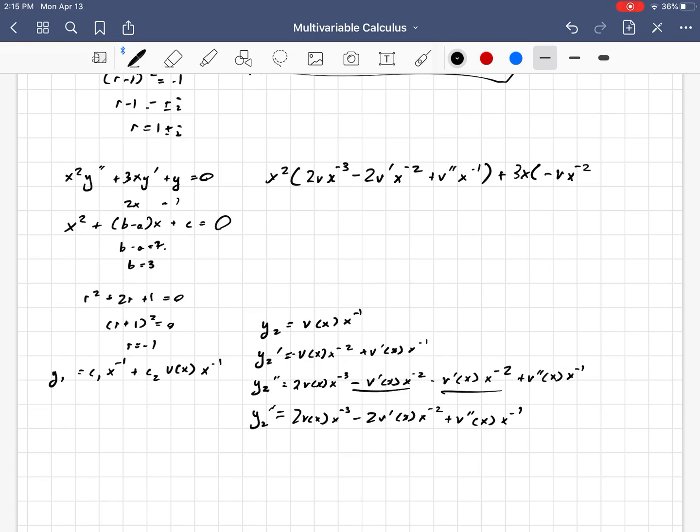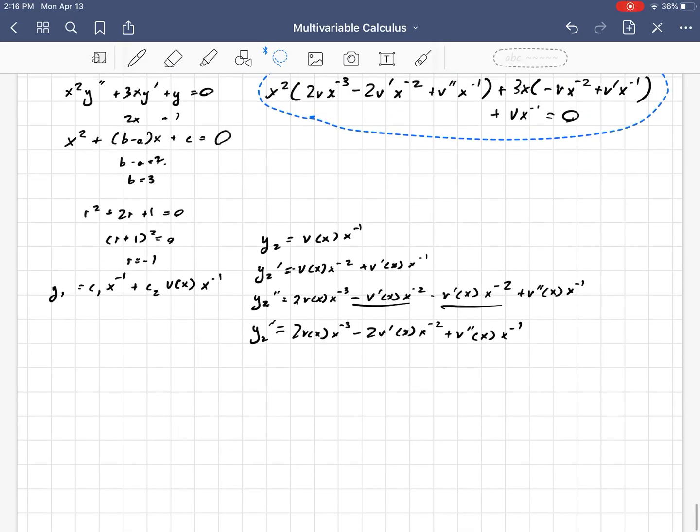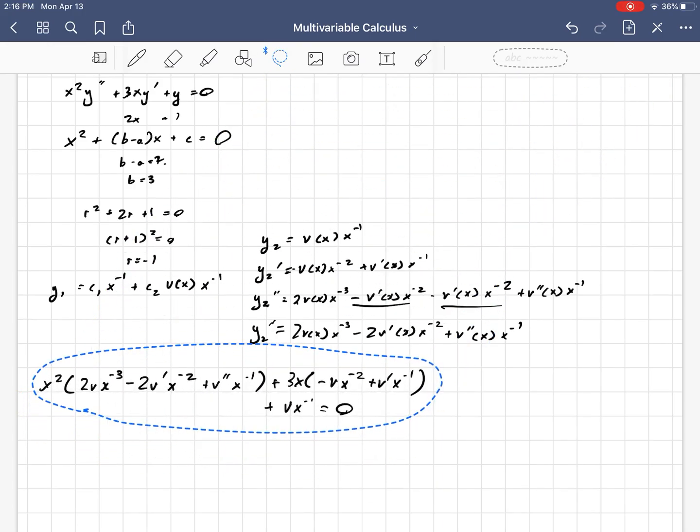Plus now the vx⁻¹, and that needs to all be 0. So I'm going to drag this down here, so that I have a little more room.